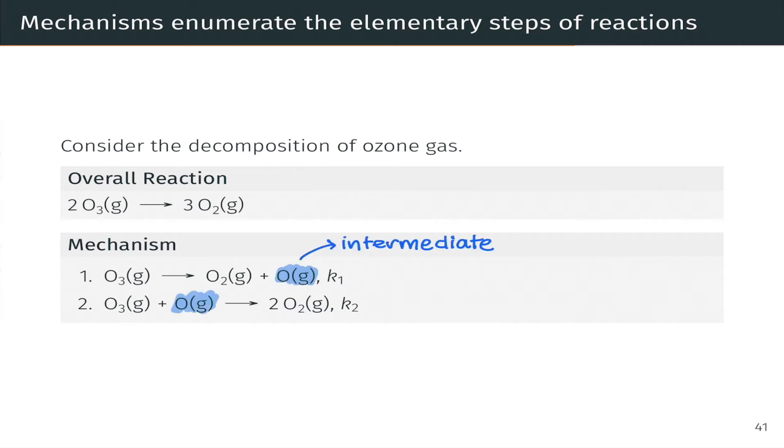Within the mechanism, we can recognize the oxygen atom as a reactive intermediate. It's produced in the first step and consumed in the second. So it's not a reactant and it's not a product. It's made in the middle of the mechanism and consumed before the products are formed.